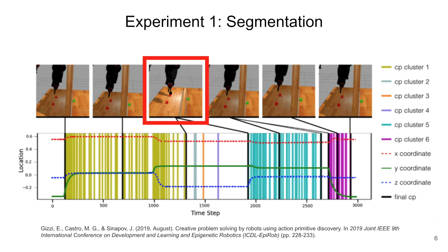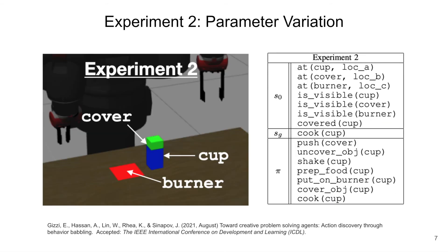In our parameter variation experiments, the agent discovers variations of the original actions to solve a simple cooking task when the environment changes. For example, it learns a notch action from the original push action when the cover of a cup becomes lighter.